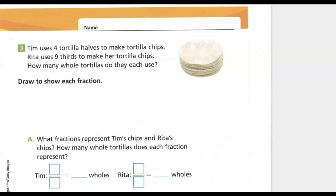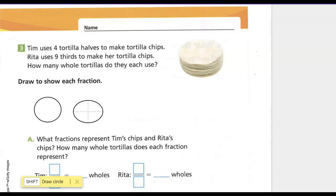Here's the situation: Tim uses four tortilla halves to make tortilla chips. Rita uses nine-thirds to make her tortilla chips. How many tortillas do they each use? Let's draw Tim's tortillas. He uses four halves, so we'd better have two wholes here. We're going to cut these in half — one-half, one-half, one-half, and one-half. That's Tim.